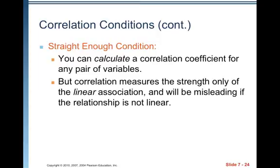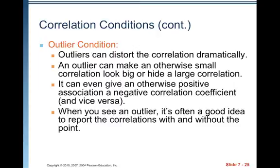The straight enough condition: you can calculate a correlation coefficient for any pair of quantitative variables, but correlation measures the strength only of the linear association and will be misleading if the relationship is not linear. The establishment of a linear relationship needs to occur before you start calculating correlations. The outlier condition: outliers can distort the correlation dramatically. An outlier can make an otherwise small correlation look big, hide a large correlation, or even give an otherwise positive association a negative correlation coefficient and vice versa. When you see an outlier, it's often a good idea to report the correlations with and without that point.